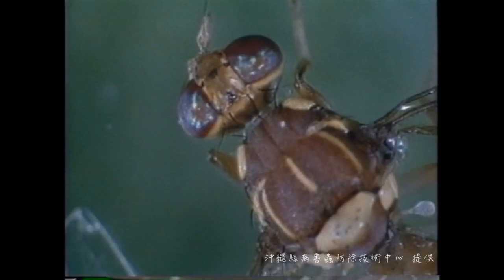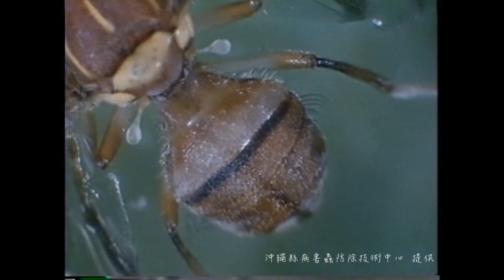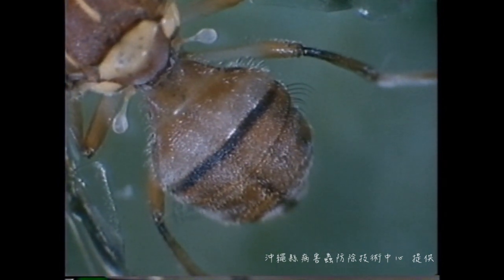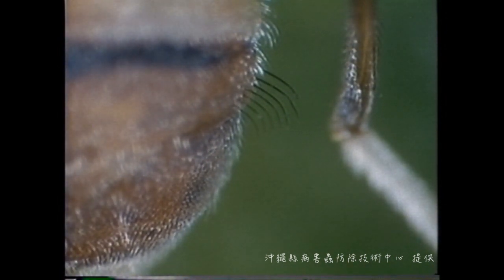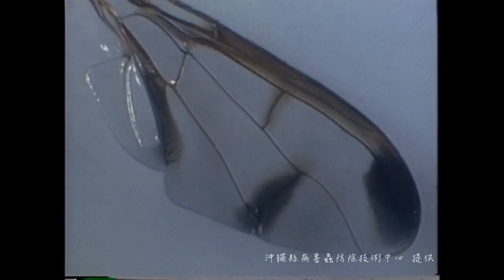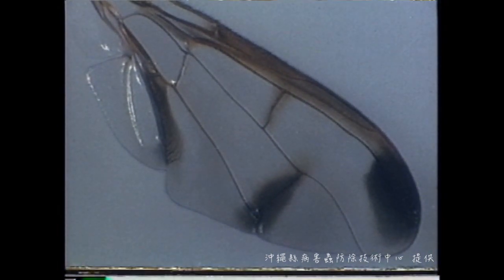The melon fly also possesses an unusual mechanism for releasing its sex pheromone. Besides the differences in the sex organs, the melon fly male differs from the female in the presence of hairs called turgal bristles on its third abdominal segment. Also, two types of fine hairs that are concerned with pheromone release are present on the wings of the male.